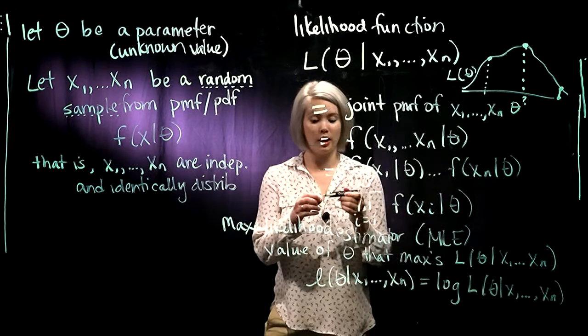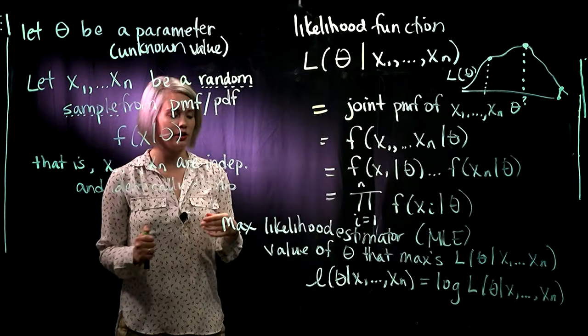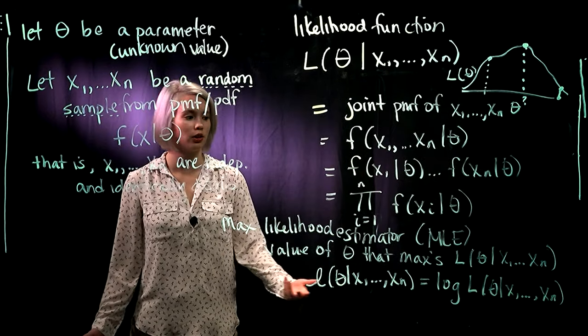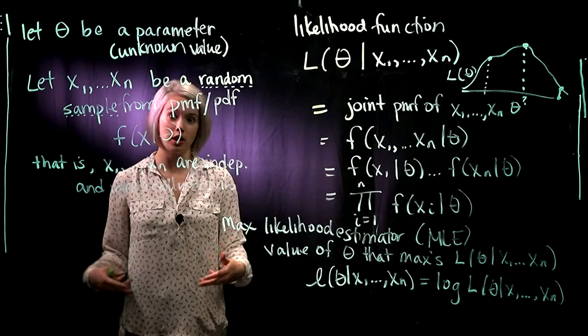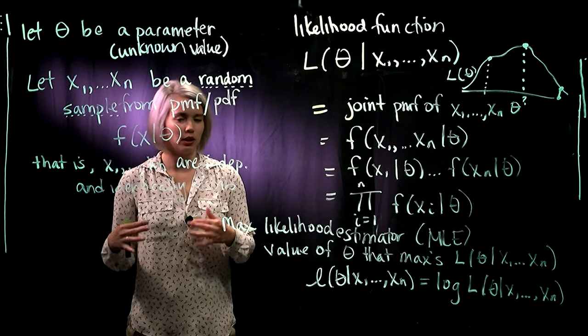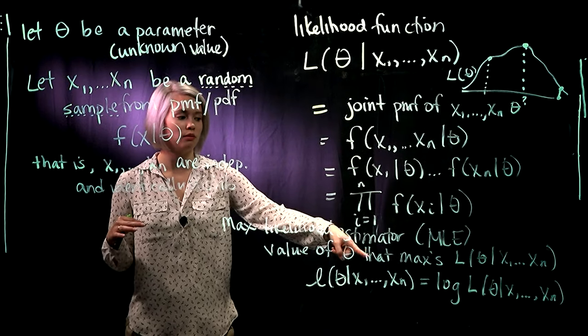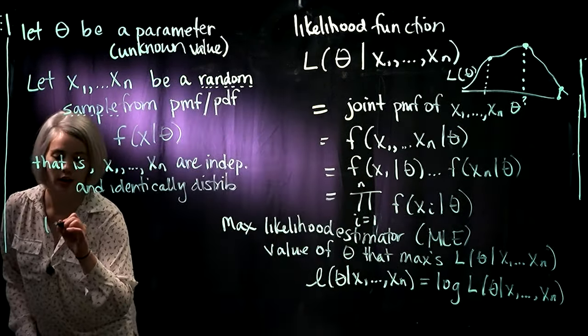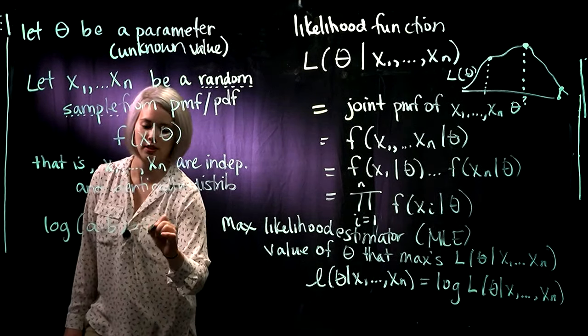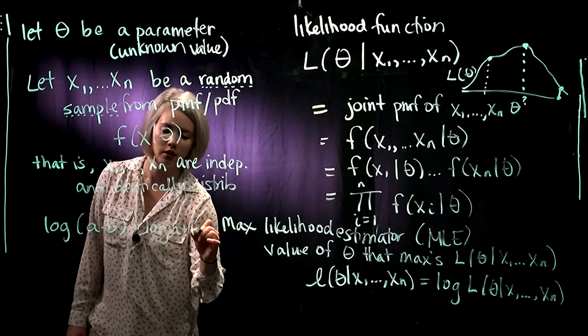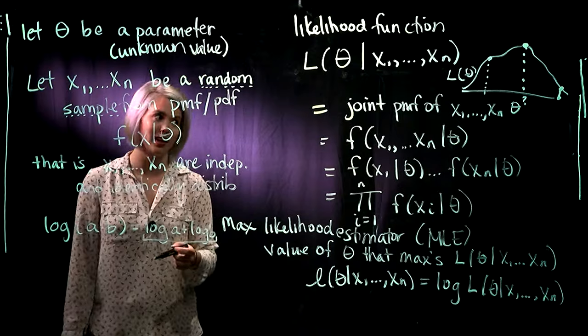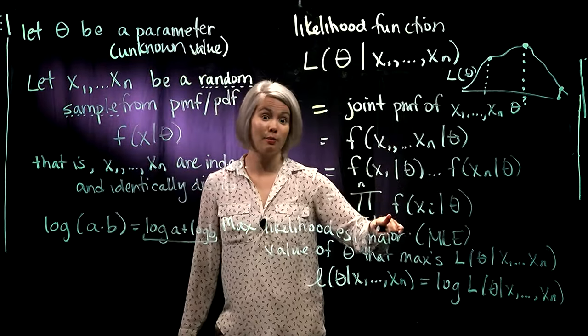And in this class, whenever we're talking about log, we always mean natural log. So we're using this log likelihood because it's a monotone function. So if we're maximizing the log likelihood, that's the same thing as maximizing the likelihood. And it's just a lot easier to use log because, remember, if we're taking the log of a product, that's just the sum of the logs. So it's a lot easier to take the derivative of a sum than it is to take the derivative of a product like this.